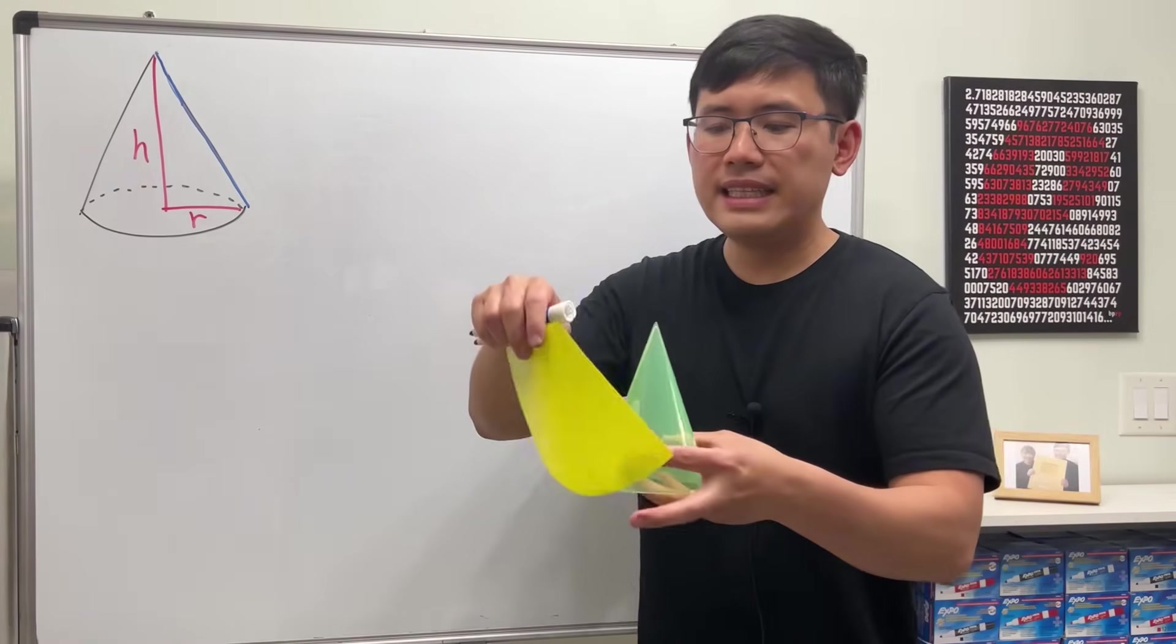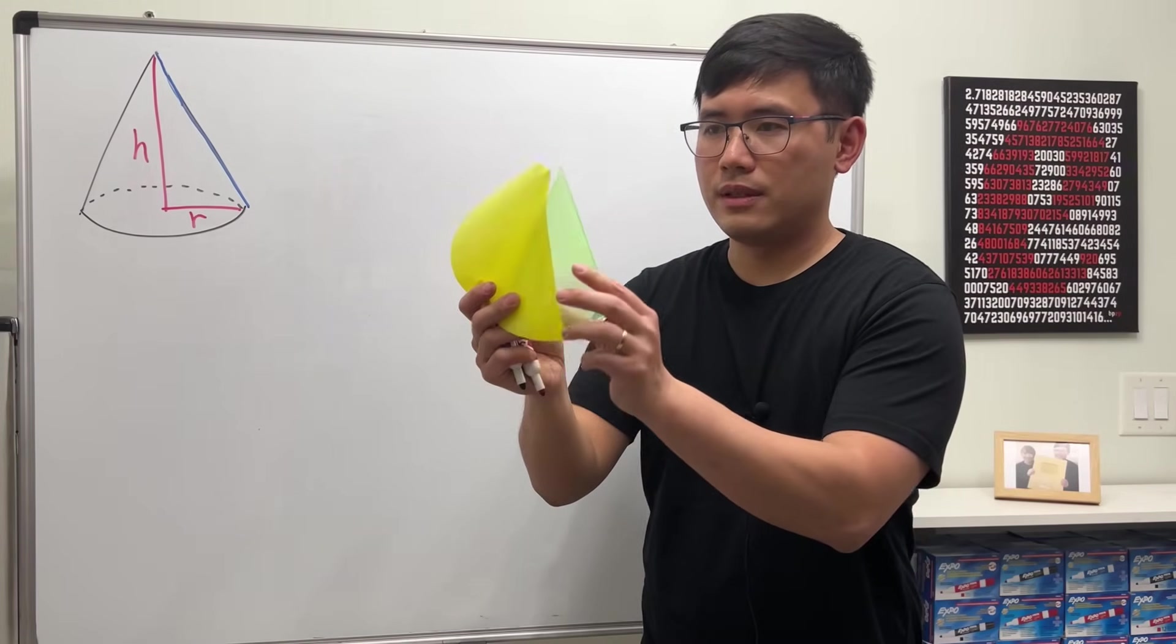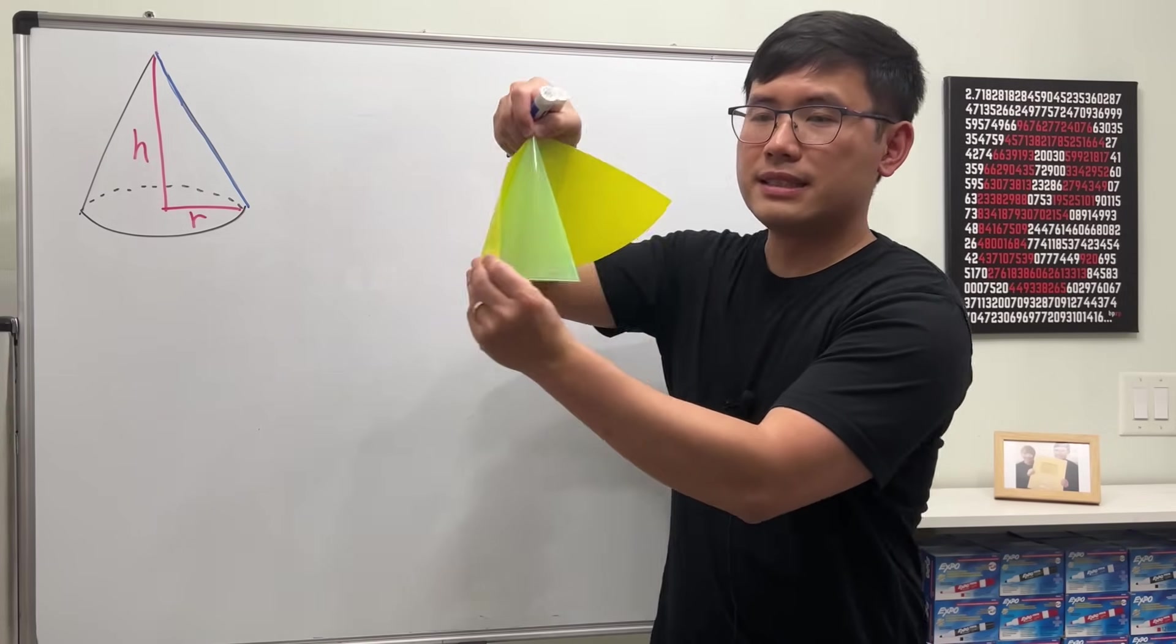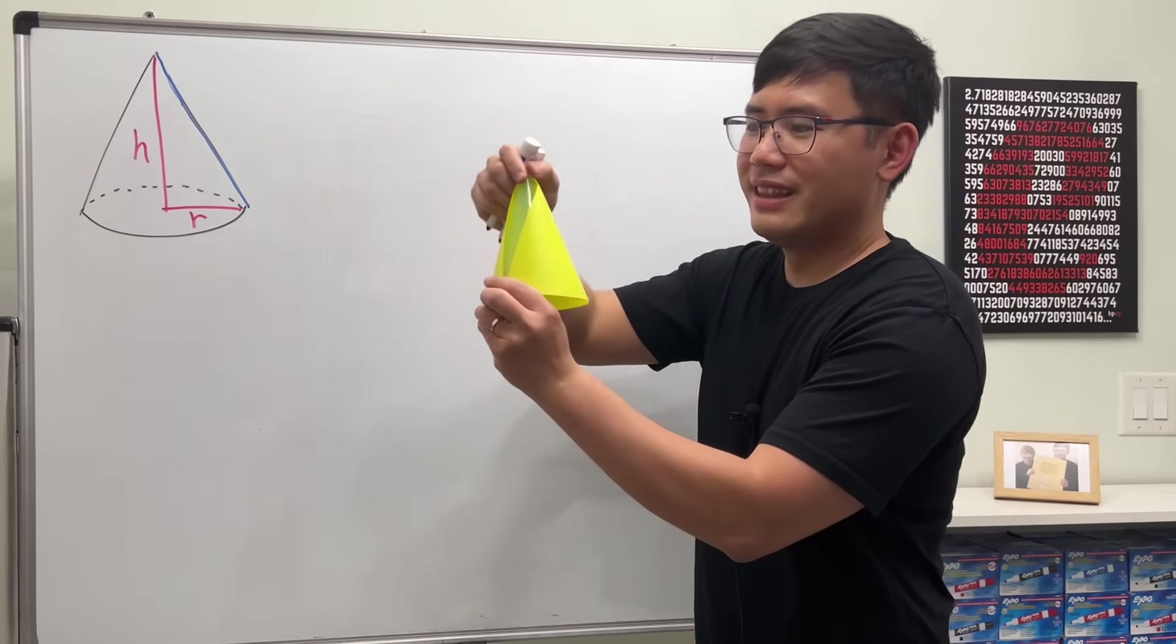And notice this right here is exactly what we call the slanted height of a cone. So from the top to the bottom, the slanted height, like this, because you can wrap it around like this.